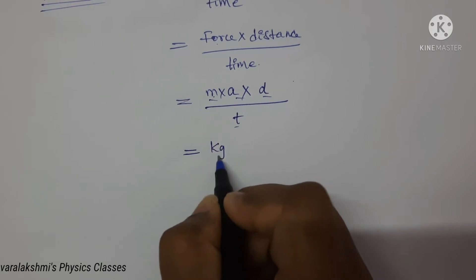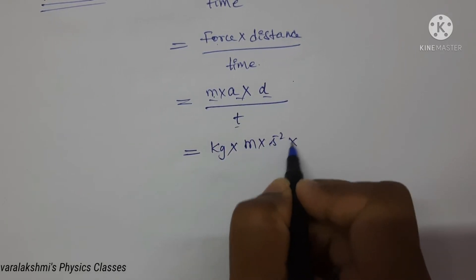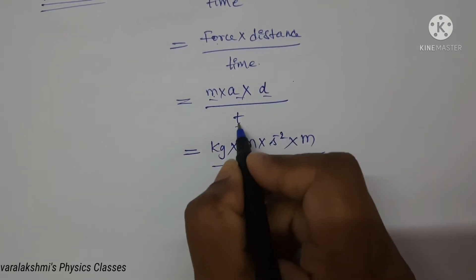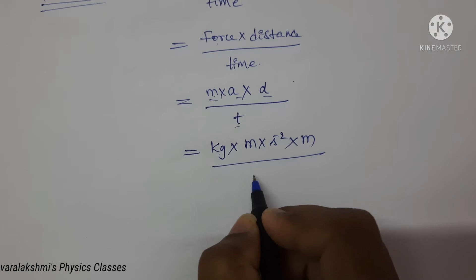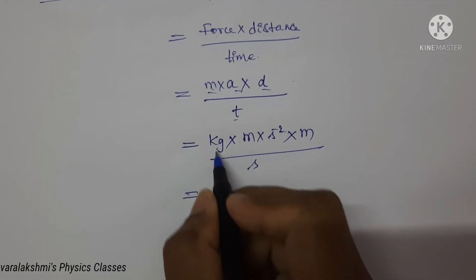For mass, kilogram. For acceleration, meter per second square. And for distance, meter. Here upon time is there, so second, which is equal to here kg.